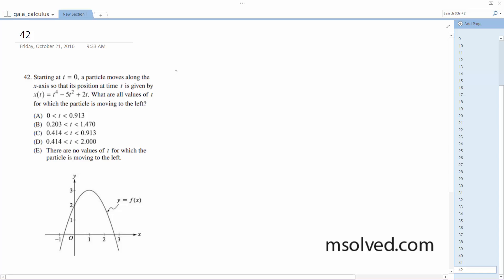So in this case, we just take the derivative of d, d of t, of t to the fourth minus 5t to the second plus 2t. What we end up with is 4t to the third minus 10t plus 2.